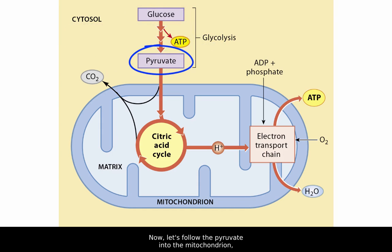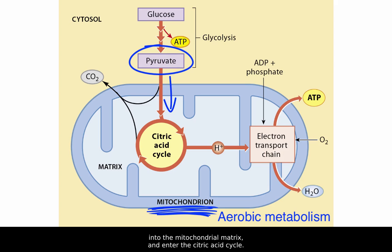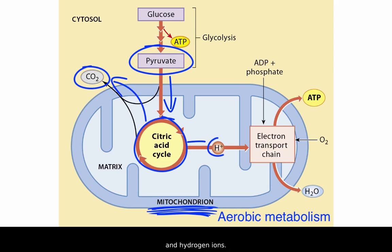Now let's follow the pyruvate into the mitochondrion, where it undergoes aerobic metabolism. In aerobic conditions, meaning with oxygen, these pyruvate molecules are absorbed into the mitochondrial matrix and enter the citric acid cycle. The citric acid cycle yields carbon dioxide and hydrogen ions.